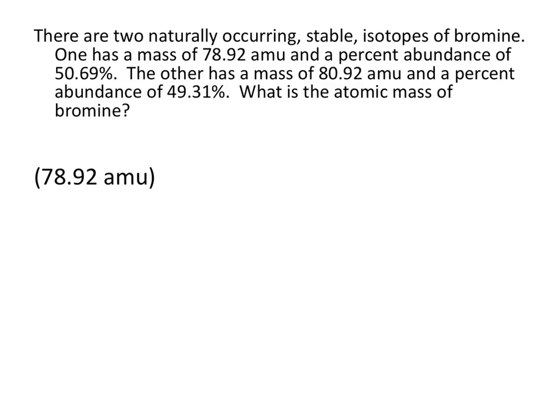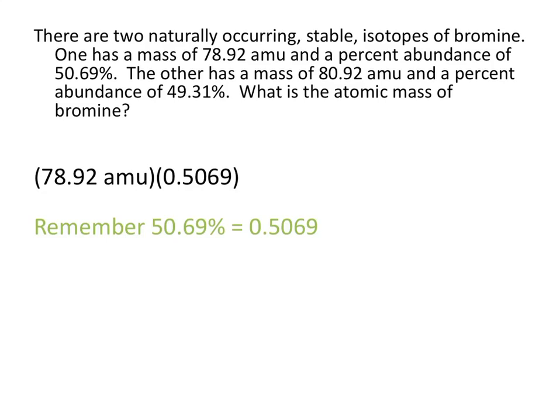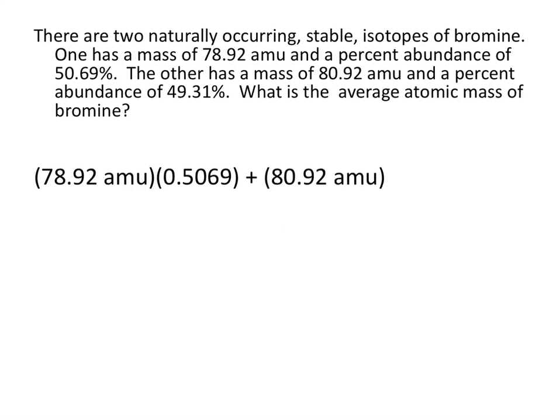Remember, isotopes of elements are those that vary in the number of neutrons in the nucleus. So we take the mass of one isotope of bromine, 78.92, and multiply it by its percent abundance written as a decimal — so 50.69% equals 0.5069. Then we add to that the mass of the second naturally occurring isotope of bromine, 80.92, times its percent abundance also written as a decimal, 0.4931. This gives us an average atomic mass of 79.91 AMU, and this is the value that you would see written on your periodic table.